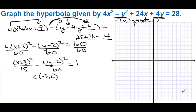We plot the center at (negative 3, 2). Then we go right and left the square root of 15, which is approximately 3.87 — almost 4. And we go up and down the square root of 60, which is approximately 7.75, so about 7.8.